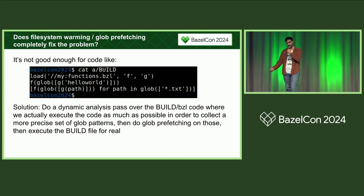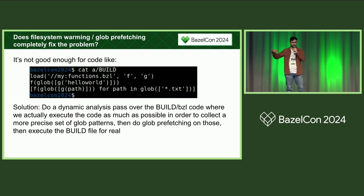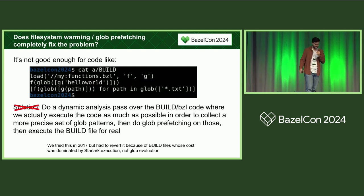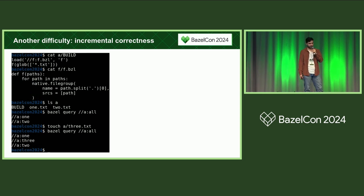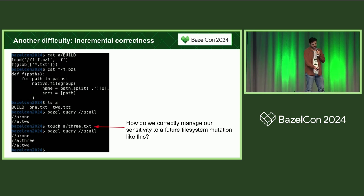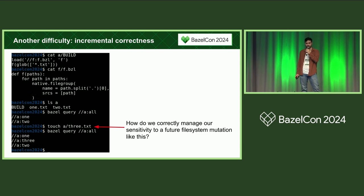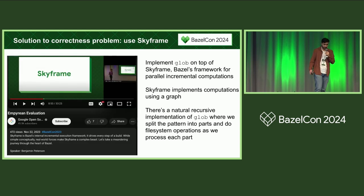So let's do a dynamic analysis pass — execute the build file as much as possible in order to more thoroughly learn the full set of glob patterns needed. We did this, but then had to revert it in 2017 because in a situation where a build file's cost is dominated not by glob work but by the actual Starlark work, we were essentially doubling that cost. Another difficulty is incremental correctness: if we do a Bazel query, then add a file, then another Bazel query — how is Bazel managing sensitivity to arbitrary file system mutations?